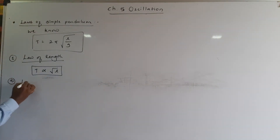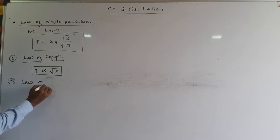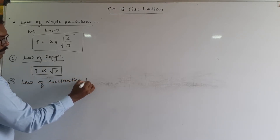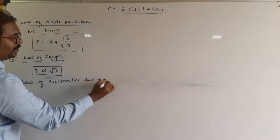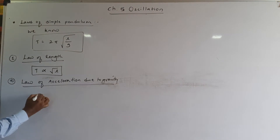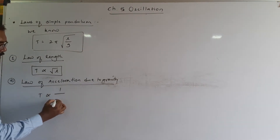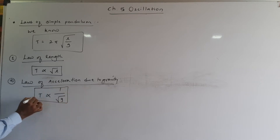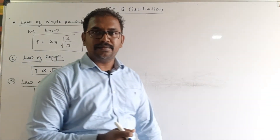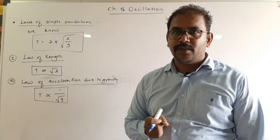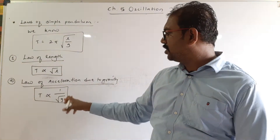The second law is called the law of acceleration due to gravity. In this law, the period of a simple pendulum is inversely proportional to the square root of acceleration due to gravity, if the length of the simple pendulum is constant.